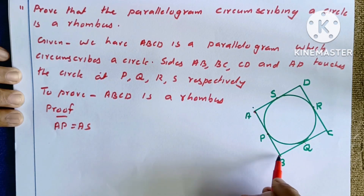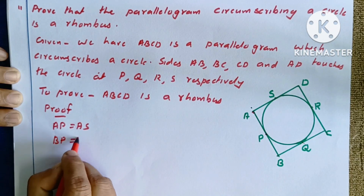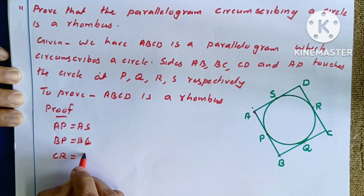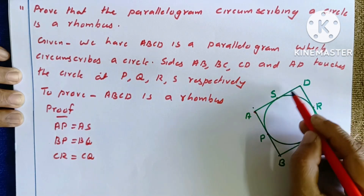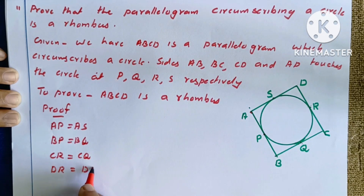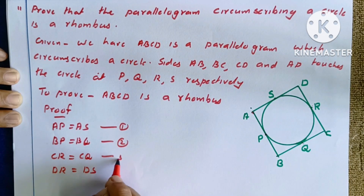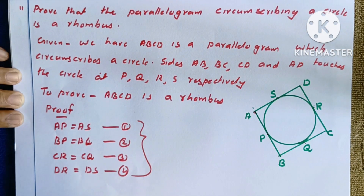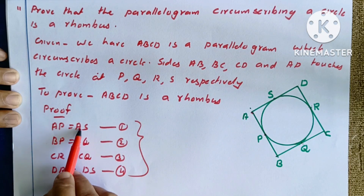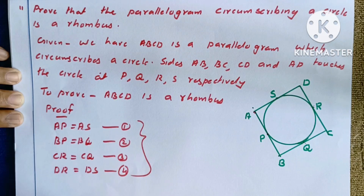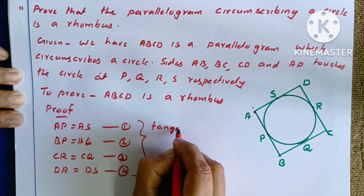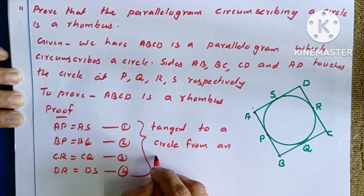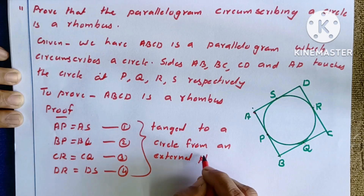From external point A: AP equals AS. From external point B: BP equals BQ. From external point C: CR equals CQ. From external point D: DR equals DS. The reason is that tangents drawn to a circle from an external point are equal.